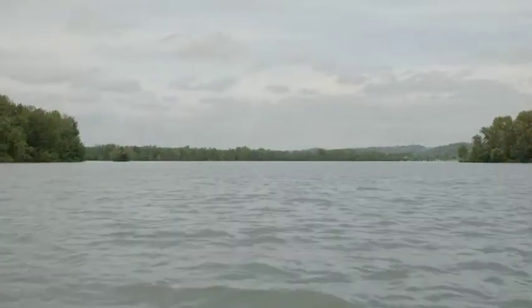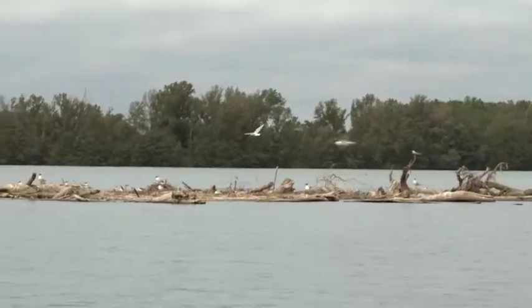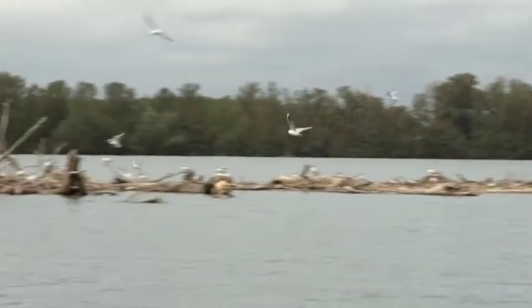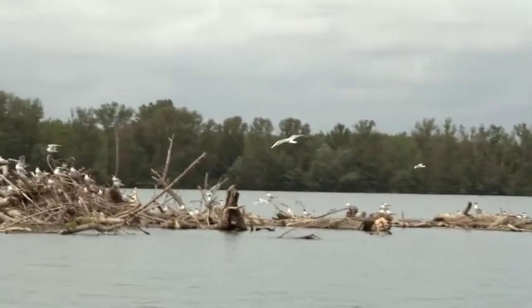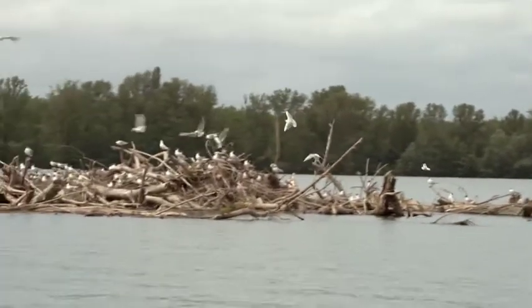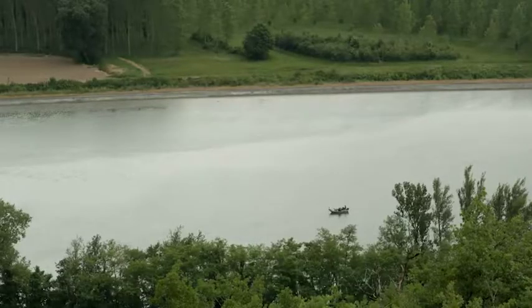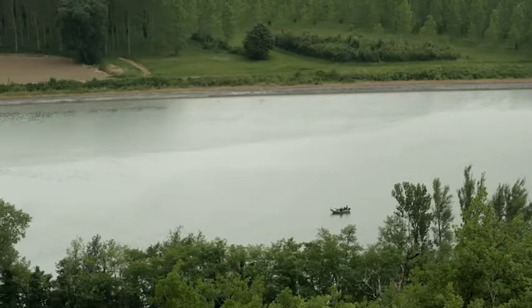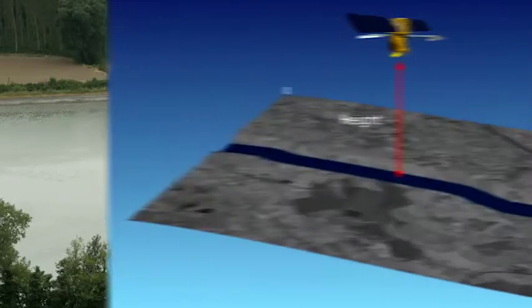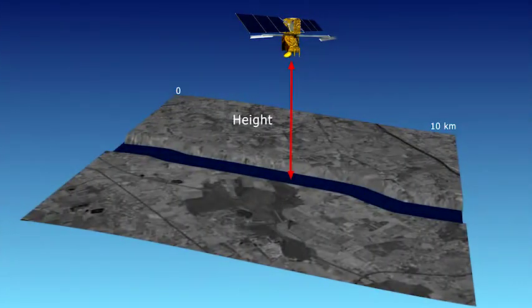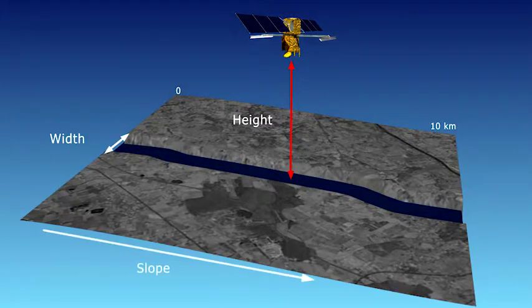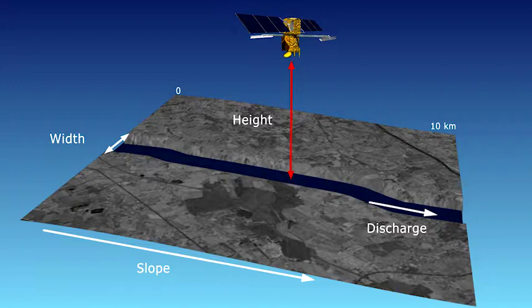The first of these is a reach product. On each SWAT satellite overpass, observations are attached to the predefined reaches stored in the database. This product provides the mean height, width, slope, and discharge of the river for the reach in question.